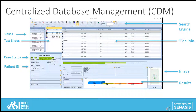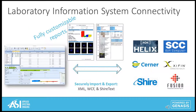Once a slide is scanned in, the system is intuitive — knowing which application to open for analysis based on the type of test. For example, if you had a G-band captured image, the system would know to open up BandView for G-band analysis, or if you had a HER2 slide, the system would open up IHC membrane analysis. Whether your lab uses a local or brand-name LIS system, you'll be able to securely import and export patient information, images, case results, and reports between the two servers using either XML, WCF, or shared text files with no hidden costs.